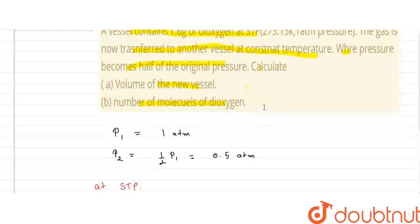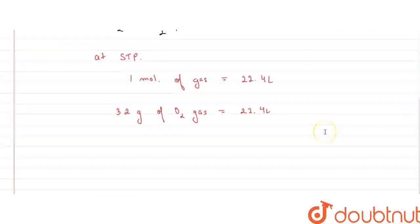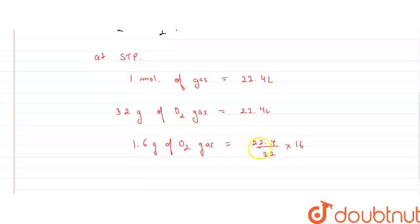Now, in the question, we have been given 1.6 gram of dioxygen. So, mass of dioxygen is 1.6 gram. We have calculated for 32 grams, so we can calculate it for 1.6 gram as well. For 1.6 gram of O2 gas, it will be equal to 22.4 upon 32 into 1.6. So, this comes out to be 1.12 liter.